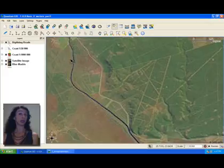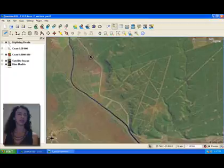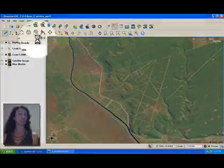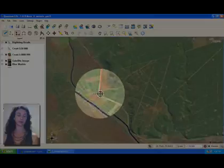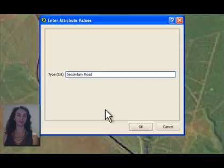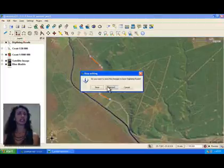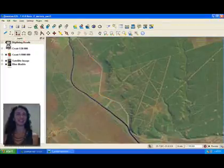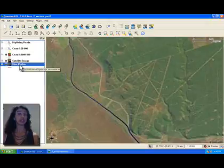By now, you might be wondering, where does vector data come from? Vector data is captured using a process called digitizing. For example, we can trace roads visible on a satellite image like this. We will look at digitizing more closely in an upcoming topic. Vector data can also be obtained from devices such as GPS receivers.